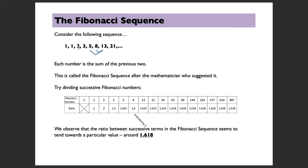For example: 1 plus 1 makes 2, 1 plus 2 makes 3, 2 plus 3 makes 5, 3 plus 5 makes 8, and so on. That's called the Fibonacci sequence, named after the mathematician who first described it. If you divide successive Fibonacci numbers, this is what you get.